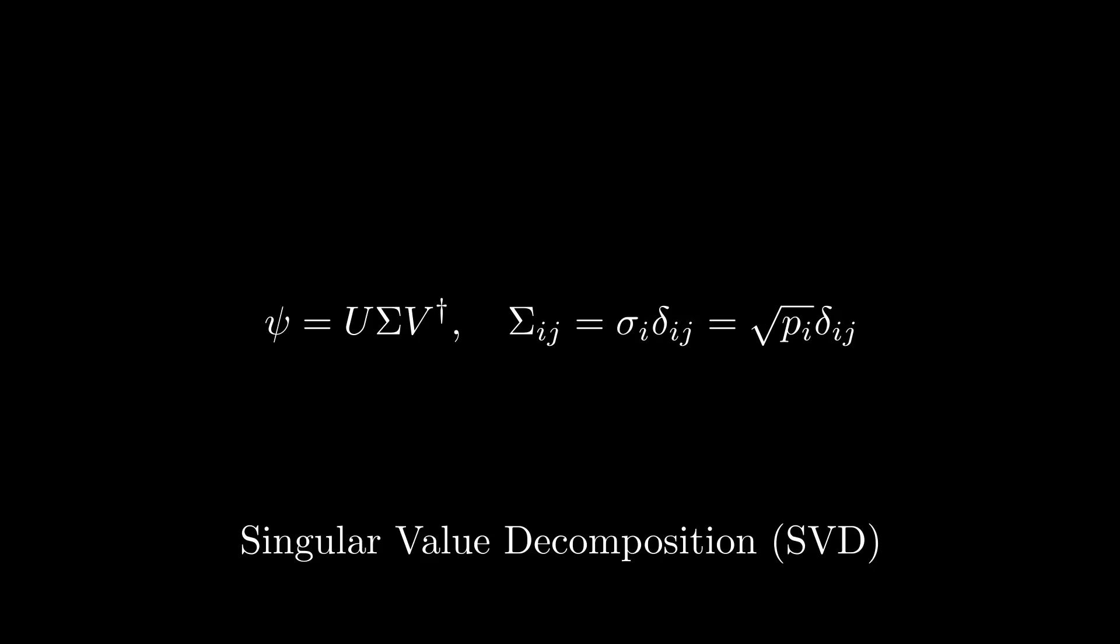Don't worry if you don't know how to do SVD, as I'll explain the process in the following example. As a simple exercise, let's compute the Schmidt decomposition of the state psi equals |0,0⟩ plus i|0,1⟩ with the appropriate normalization factor of 1 over square root 2, using SVD. Of course, this state is quite easy to find the Schmidt decomposition for by just factoring, but I want you to get practice using the more general SVD method as well. Pause the video and work through the calculation.